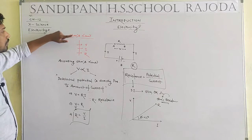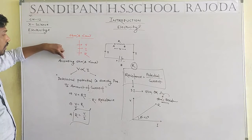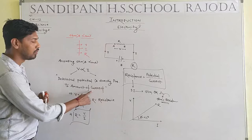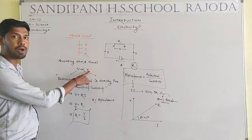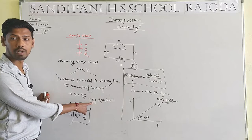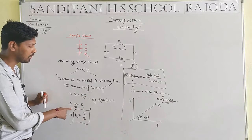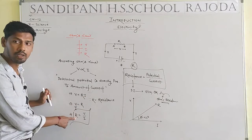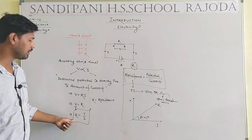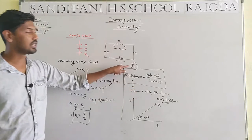Ohm's law establishes a relation between voltage, current, and resistance. According to Ohm's law, developed potential is directly proportional to amount of current: V is directly proportional to I. The proportional sign is replaced by constant R (resistance), so V equals R times I. Therefore, R equals V by I — resistance is the ratio between potential and current. The SI unit of resistance is Ohm, represented by Ω.